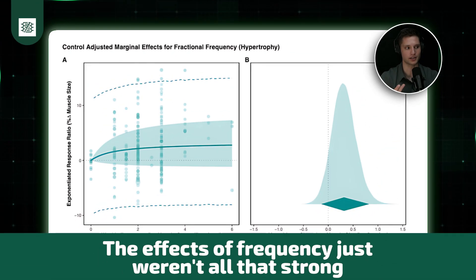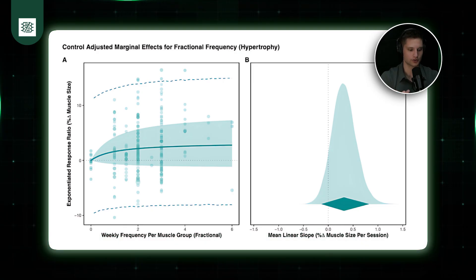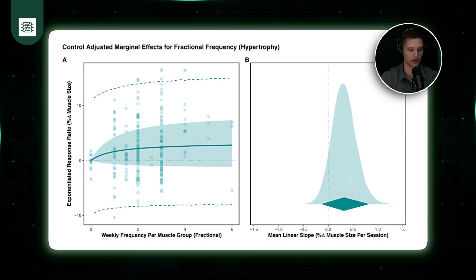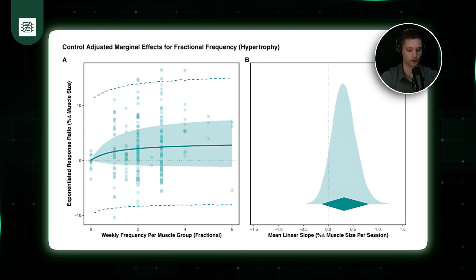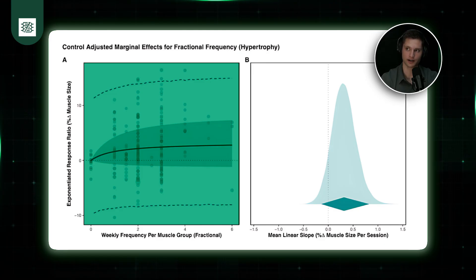So the effects of frequency just weren't all that strong. Let's break down what we're looking at here. This is our primary meta-regression looking at the independent effects of frequency in that fractional quantification method and its effects on changes in muscle size. So let's focus on Panel A here to start. That's on the left-hand side here.